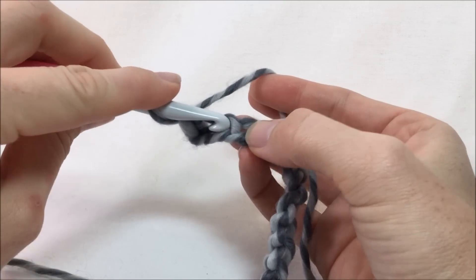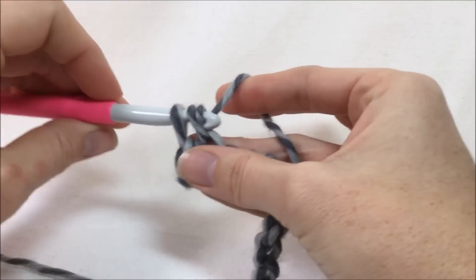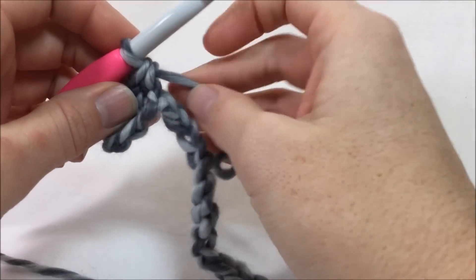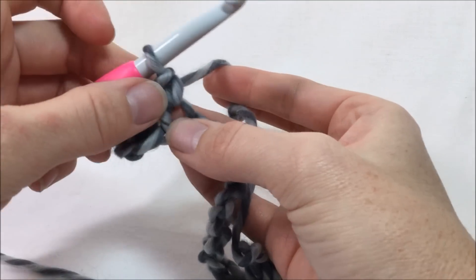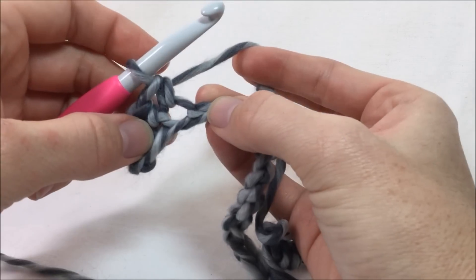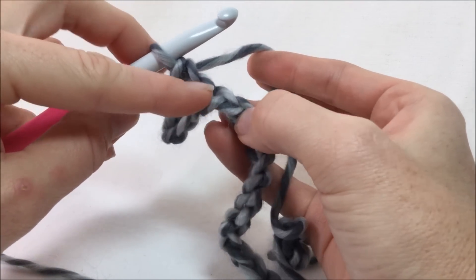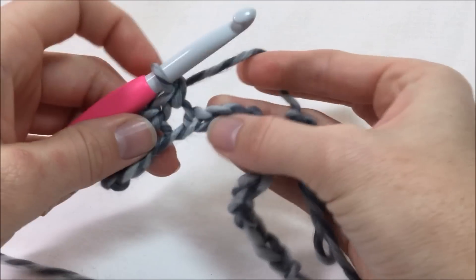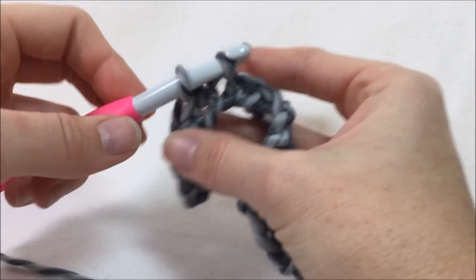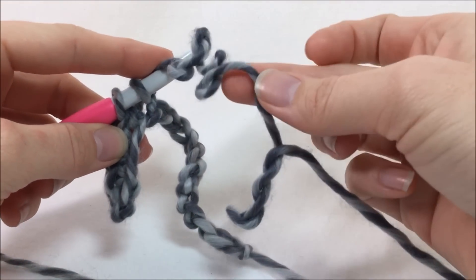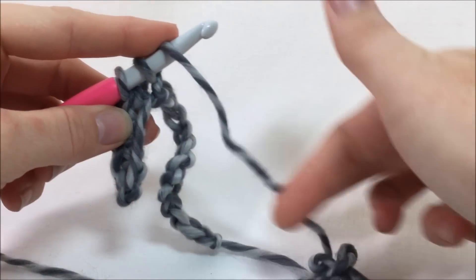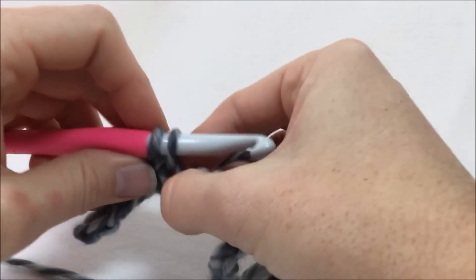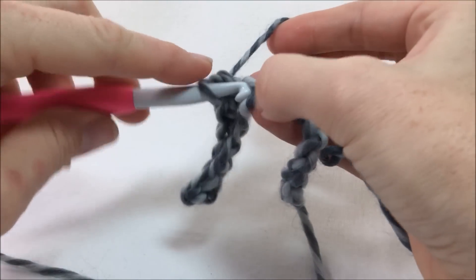Then we're going to work into our next chain, do another single crochet in the next one. So as you're working, if you put your work down and you pick it back up and you're like, where is my next chain? Just kind of look at the stitches you've made. Pull on it. It helps to create like a big hole because then you know that this one's been worked into, so you look for the next one after. Pull your stitches apart sometimes. It makes it a lot easier to see what's going on. So you're going to have 62.